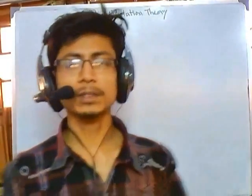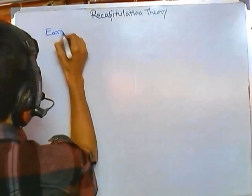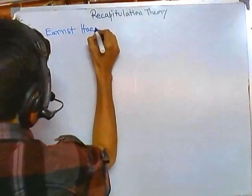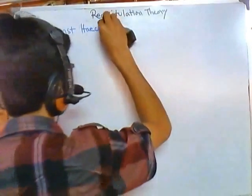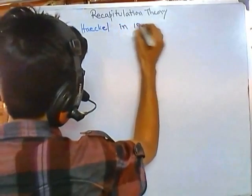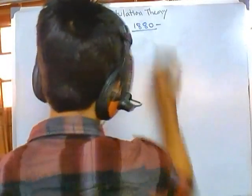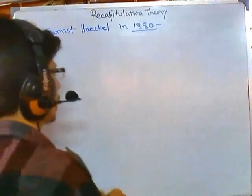Let's talk about recapitulation theory briefly. Recapitulation theory, or repeat theory, is a hypothesis by Ernst Haeckel. The developer of this idea was Ernst Haeckel, around the 1880s. At this particular time, he developed this idea of recapitulation theory.